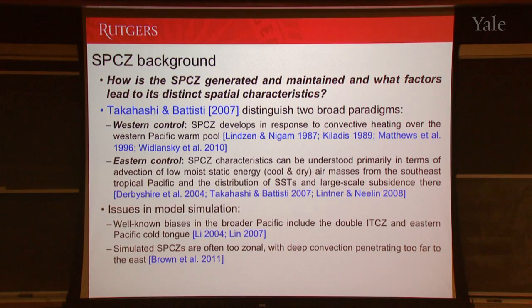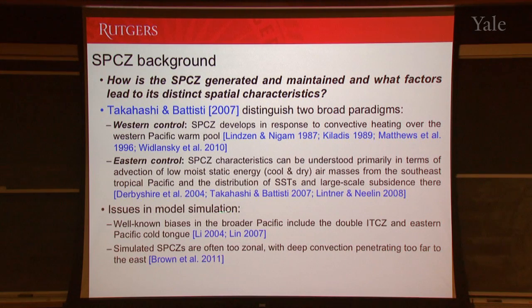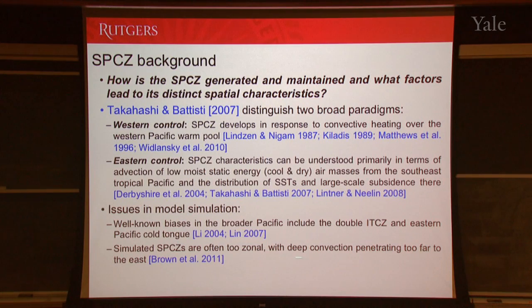Why do we care about it? There's the obvious impact side — things like flooding — but also if you run climate models you're very familiar with biases. In the broader Pacific, there are biases like the double ITCZ: models tend to simulate two convection zones in the eastern part of the basin, one in the northern hemisphere and one in the southern hemisphere, but in observations we only see one. There's also bias in coupled models in simulating sea surface temperature, with the equatorial eastern Pacific being too cold. In terms of the SPCZ, we see biases that may be linked: the SPCZ as simulated by models is often too zonal — it doesn't have the right diagonal tilt — and it also tends to have deep convection that penetrates too far into the east.